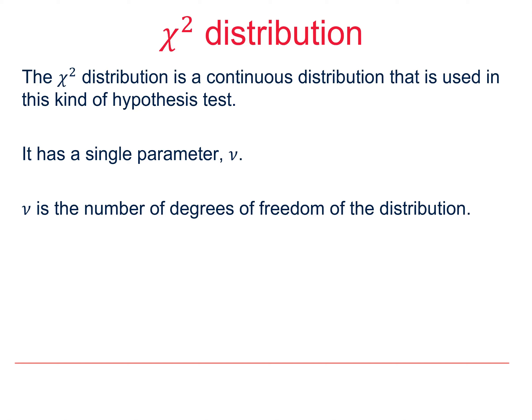This is a continuous distribution used for tests of association on contingency tables, and it has just one parameter, nu. Basically, it's a family of curves, and we need to use the one that corresponds to the size and shape of our table. The parameter is the number of degrees of freedom of the distribution in this situation. Let's see what this means.